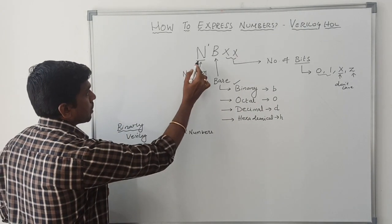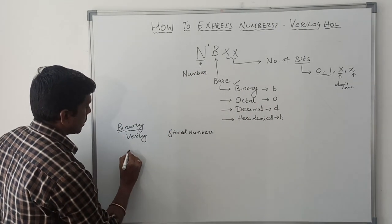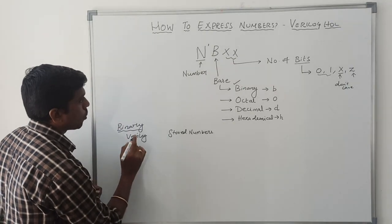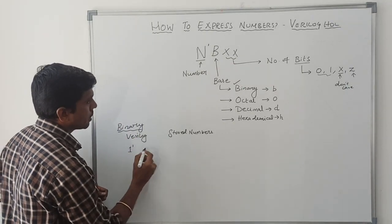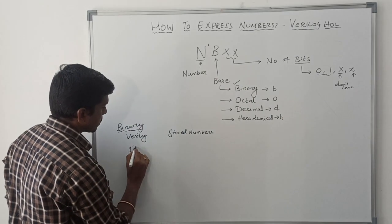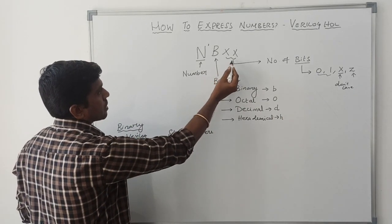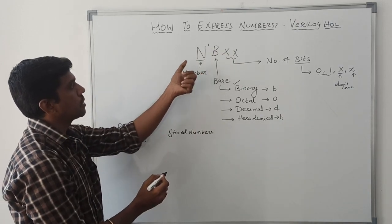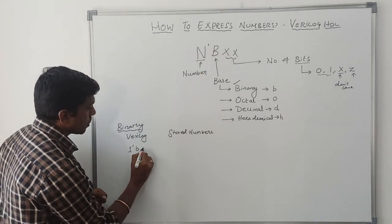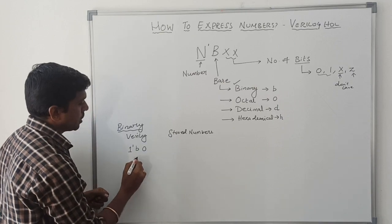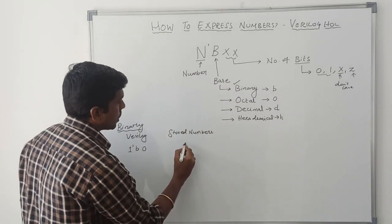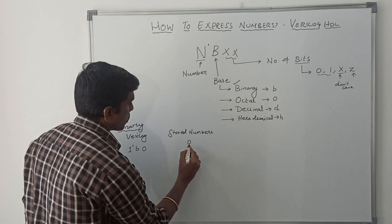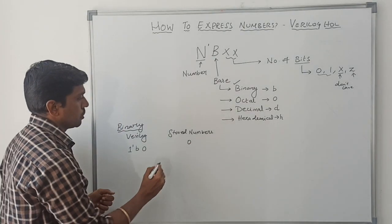N represents numbers. Let me take here 1. 1 tick, it's a binary number system. I can use b. This X X represents number of bits. The number of bits based on this number N. Here I write 0. Stored number is 0. It's a 1 bit value.